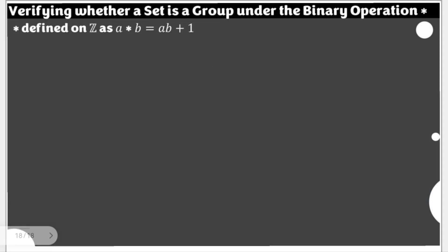For this video, we are to verify whether the given set, set Z here, the set of integers, is a group under the given binary operation star defined as a star b is equal to ab plus 1.